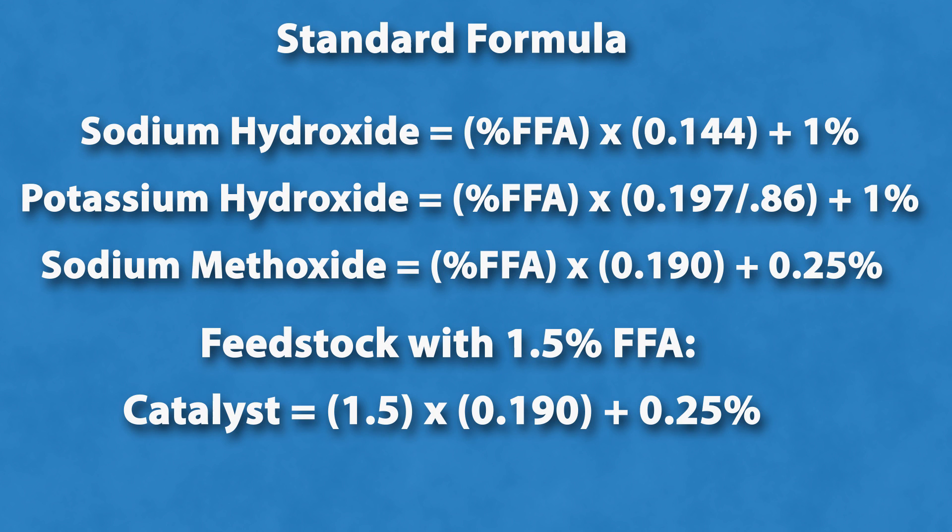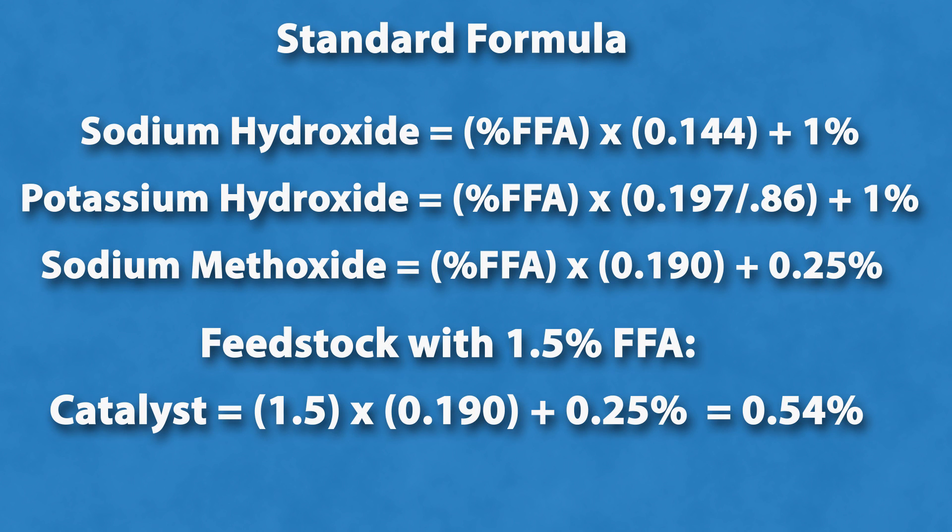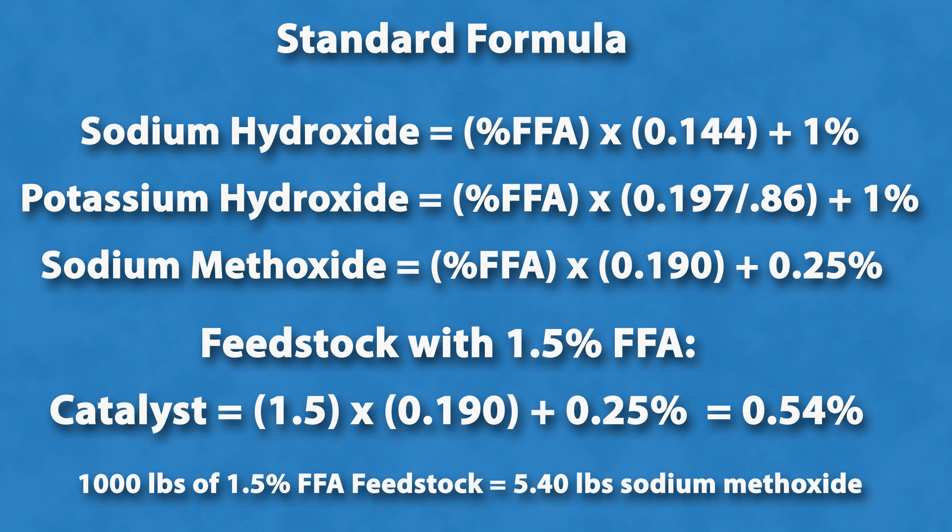1000 pounds of 1.5% free fatty acid feedstock would require 5.4 pounds of sodium methoxide.